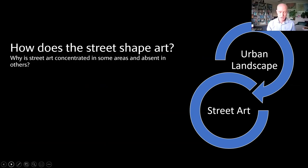We think street art has the ability to shape cultural landscapes, and we're seeing evidence that street art has the power to remake our cities and alter our ideas about place. But our presentation is going to focus on the other side of this relationship: how does the city's geography shape the location and distribution of street art? To find out, we're going to analyze city-scale economic, demographic, and cultural processes that shape the location and distribution of non-sanctioned street art here in the Twin Cities.